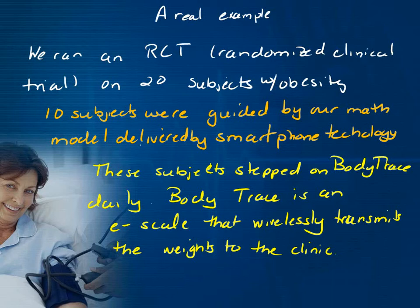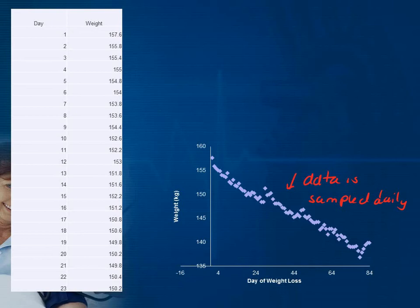A psychologist did the actual human side. That's what one person's data looks like — it's a sequence. It's not a continuous curve; it's a bunch of sample points. They stepped on the scale every day and their data got wirelessly transferred to the clinic. That's what sequence data looks like when it's real.